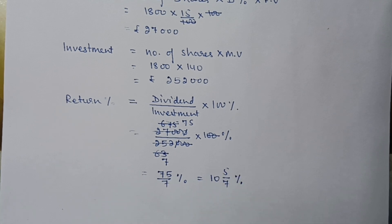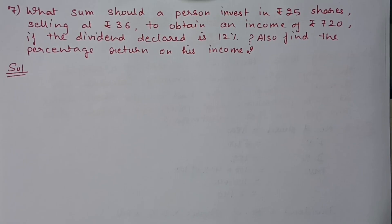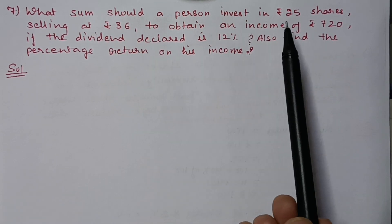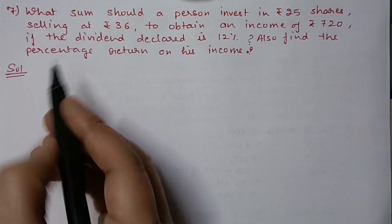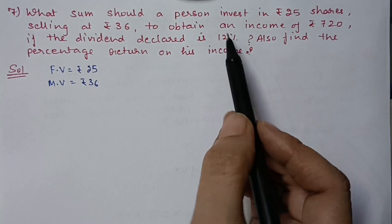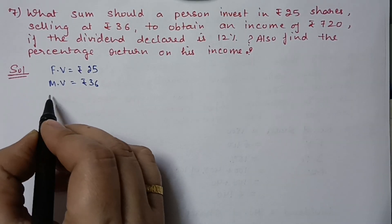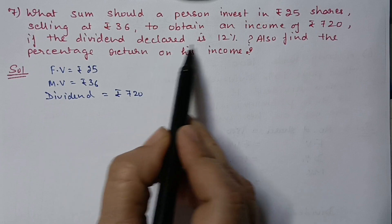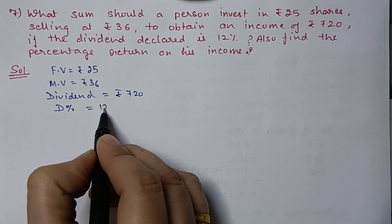Next is question number 7. What sum should a person invest in 25 rupees shares selling at 36 rupees to obtain an income of 720 rupees, if the dividend declared is 12%? Also find the percentage return on his investment. Here, 25 rupees is the face value and 36 rupees is the market value. Income (or dividend) is 720 rupees and dividend percentage is 12%.